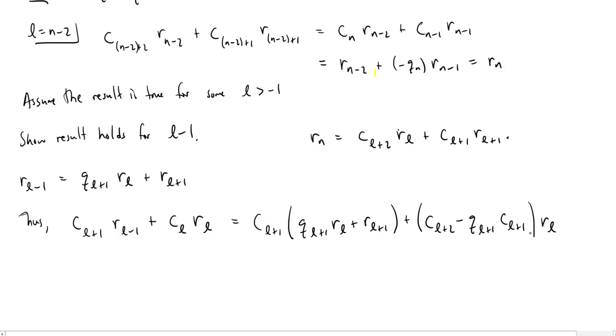Well, we have a couple of R sub L's here. So let's distribute and rearrange so that we get all the R sub L's. So I have a C sub L plus 1 times Q sub L plus 1 times an R L. I also have a C L plus 2. And let me rearrange the order of this just slightly, make the C first. So C L plus 1 times Q L plus 1, and all those get multiplied by R sub L. And what's left over? I have a C L plus 1 times R L plus 1. So C L plus 1 times R L plus 1.